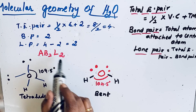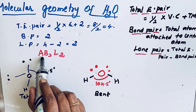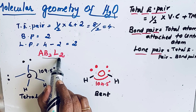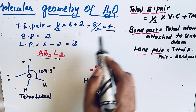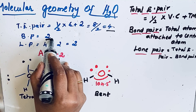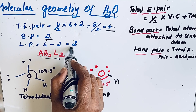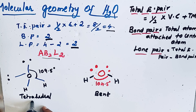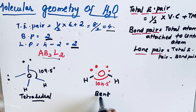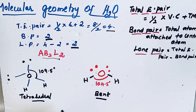In summary, for the H₂O molecule: molecular type is AB₂L₂, total electron pair is 4, bond pair is 2, lone pair is 2, electron pair arrangement is tetrahedral, but the actual molecular shape of water is bent. Thanks for watching.